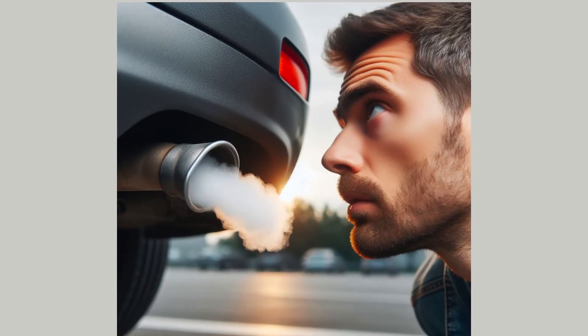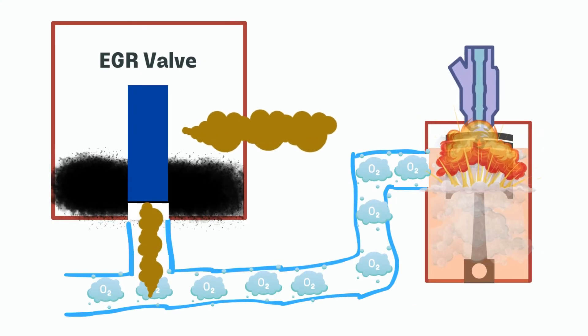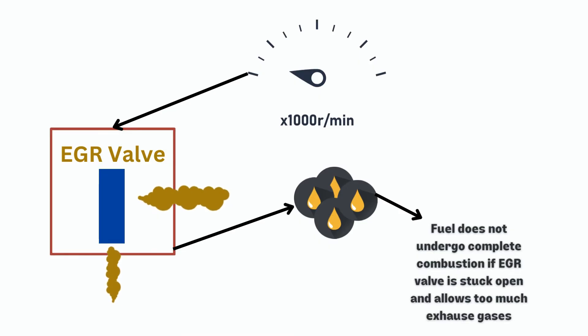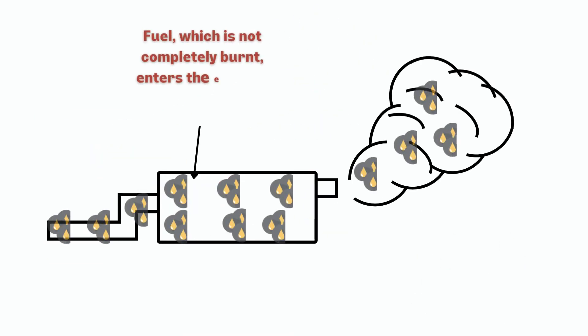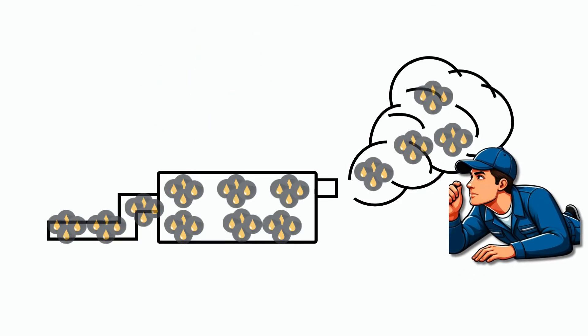Number seven, you may notice a gasoline odor from the tailpipe if the EGR valve sticks open. This happens because the excess exhaust gases entering the cylinders from the open EGR prevent complete fuel combustion. At low speed, unburnt fuel passes into the exhaust untreated, vaporizes from the heat, and smells like gas around the tailpipe.